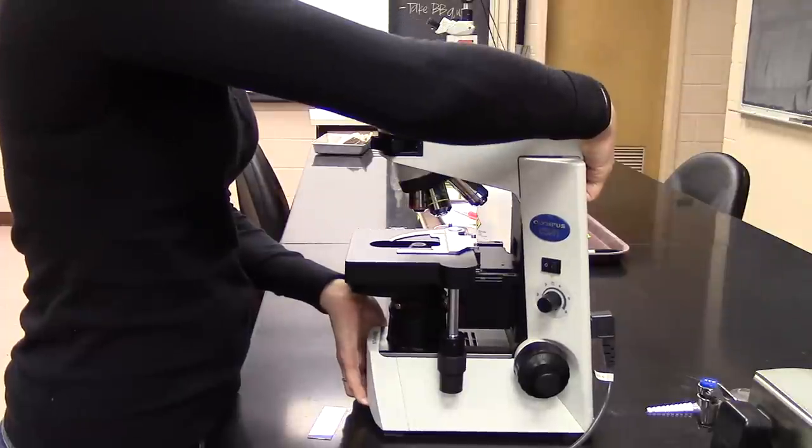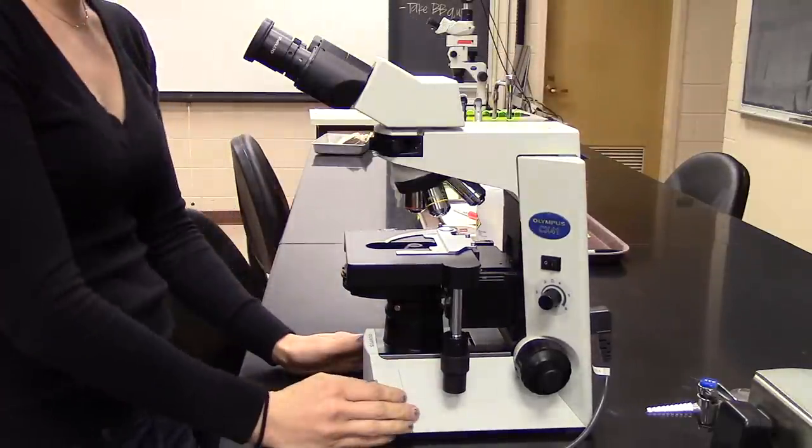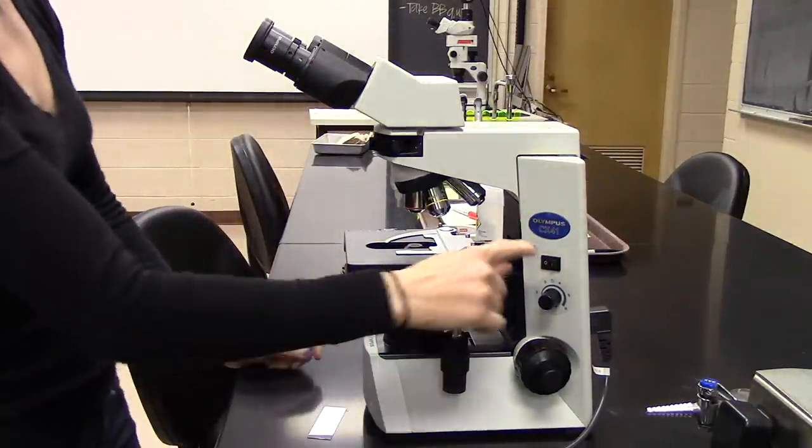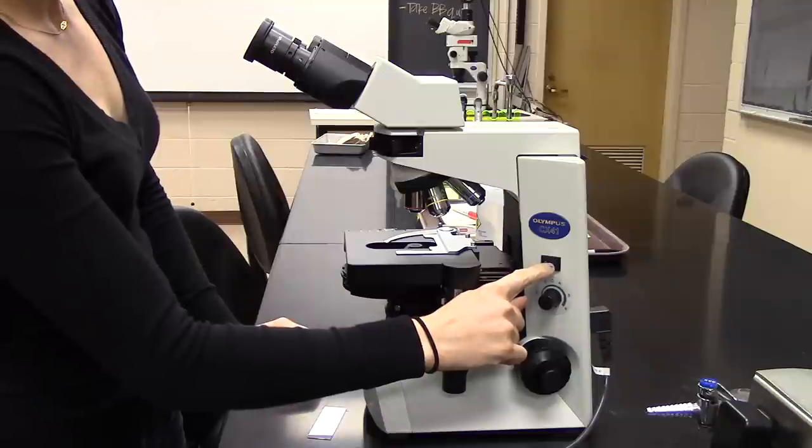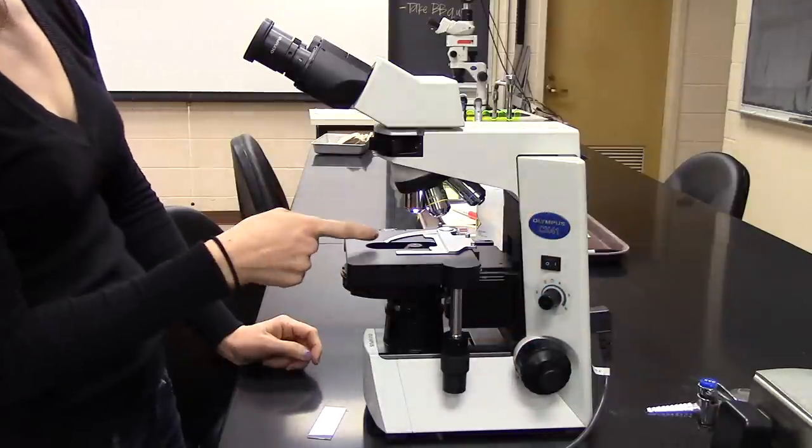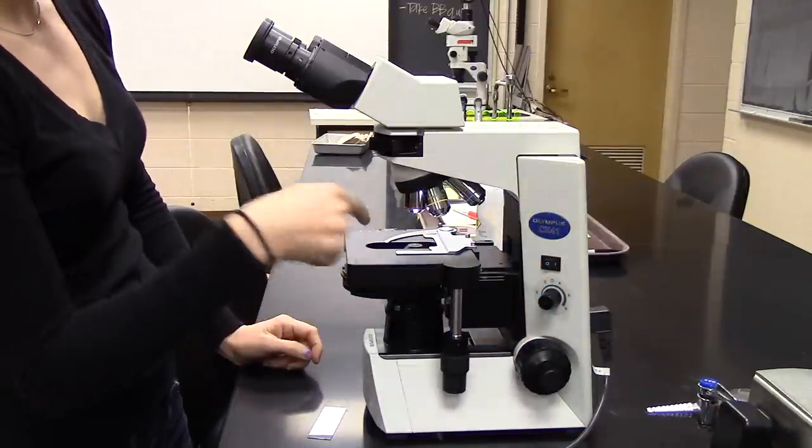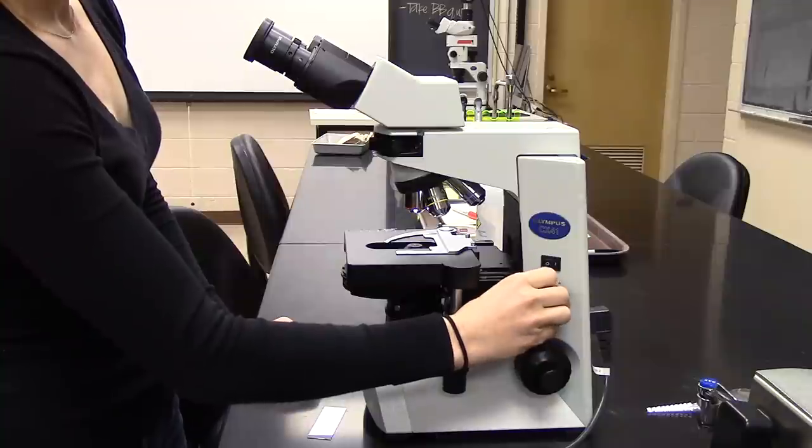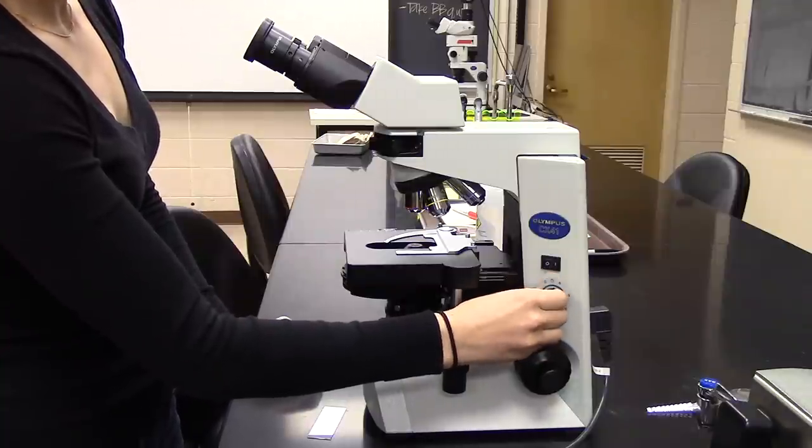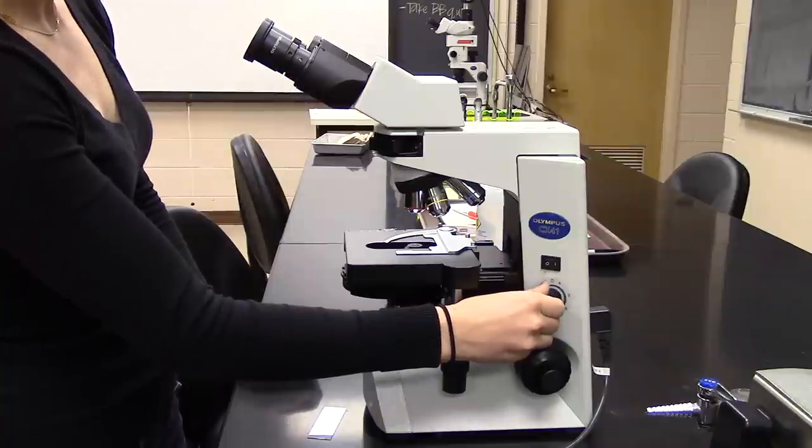Once it's in place, you'll want to turn it on. There's a little power switch right here; you should see the light turn on. If when you turn it on you don't see the light, make sure that the light adjustment knob here is turned up to a brightness level that you would see.